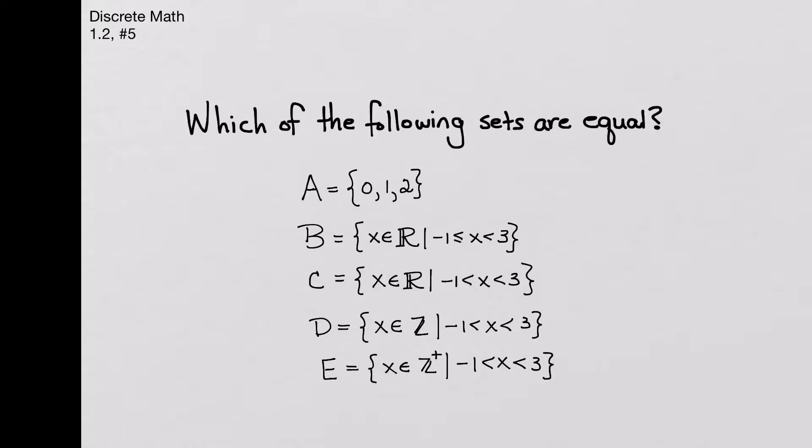Now, first of all, we have set A, which is the set of elements 0, 1, and 2. So there's only three elements in that set.